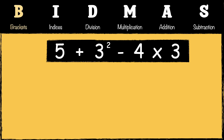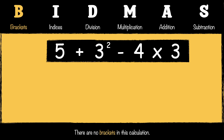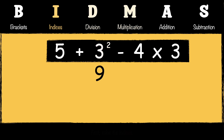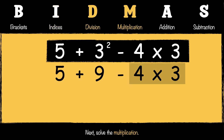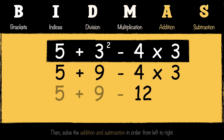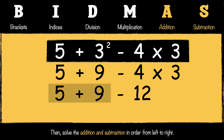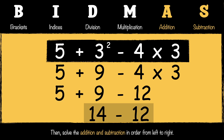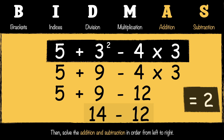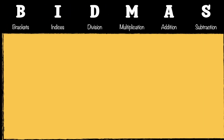Let's make it a little harder. There are no brackets, so we move to indices: 3² = 9. Then we do the multiplication: 4 × 3 = 12. For addition and subtraction we work from left to right: 5 + 9 = 14, then 14 − 12 = 2. So the answer to this calculation is 2.